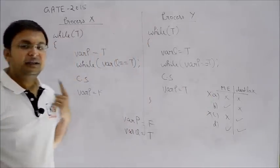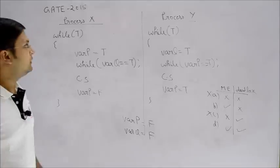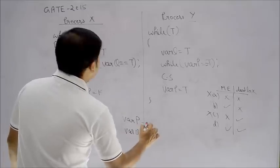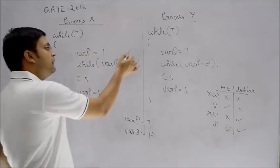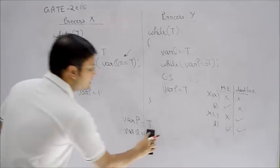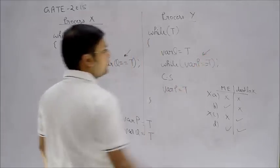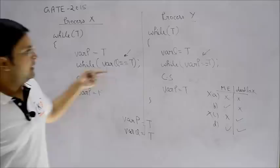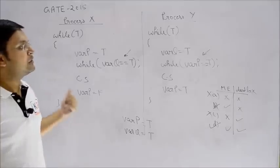There is one instance where the system can go into deadlock. Suppose initially both P and Q are false. Process X wants to enter the critical section and sets P = true, but before it can enter, a context switch occurs and process Y gets the CPU. Process Y also sets Q = true. Now both P and Q are true. If X tries to enter, variable Q is true — blocked. If Y tries to enter, variable P is true — blocked. This is a clear-cut case of deadlock.